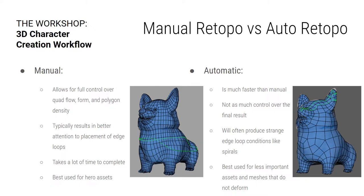Manual retopology versus automatic — which should you choose? Manual gives you full control over the quad flow, form, and polygon density, and typically results in better placement of edge loops so you won't have crazy weird spirals. But it takes a lot of time. It's best used for hero assets where edge flow is critical — especially for character faces that have to deform very specifically. Automatic is much faster, letting the computer do the work, but you have less control and it often produces strange, wacky edge loops, sometimes spirals that are almost unworkable. It's good for less important assets and meshes that don't really deform.